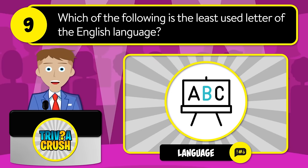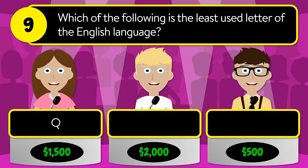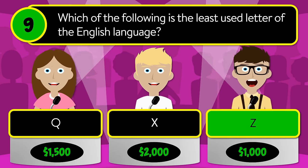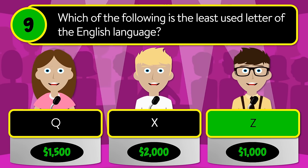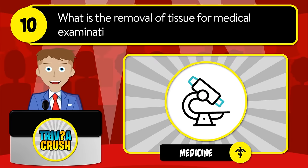Question number nine: which of the following is the least used letter of the English language? Is it Q, X, or Z? The correct answer is Z.